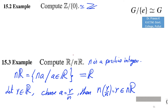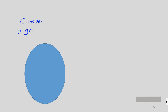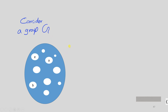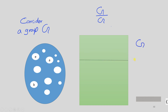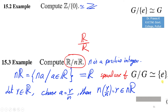Since nR equals R, the problem reduces to computing R over R. This is a special case of G over G. When we consider all cosets of G in G, the only coset is G itself, so G over G has only one element and is isomorphic to the trivial group E. Therefore R over nR is isomorphic to E.